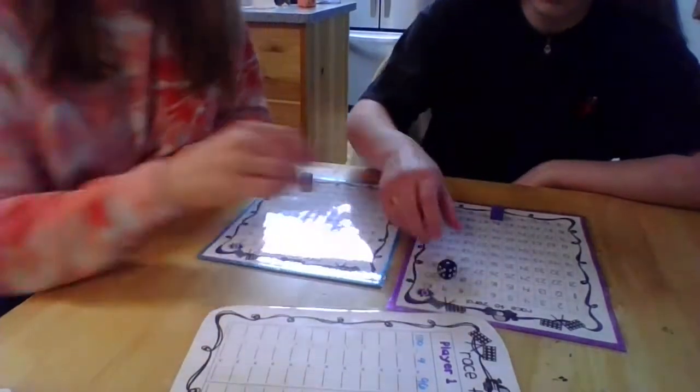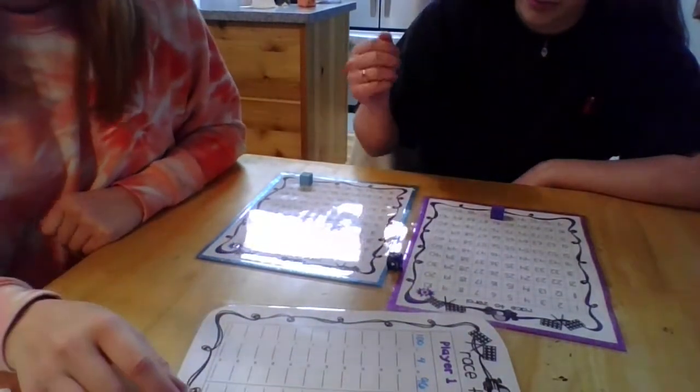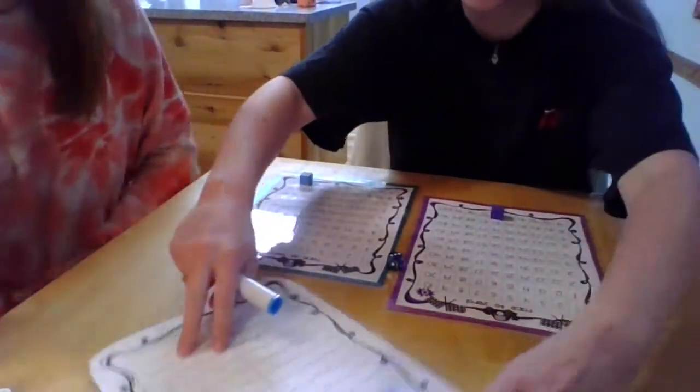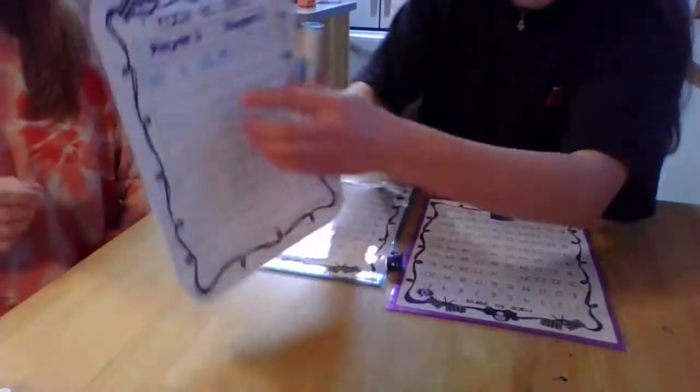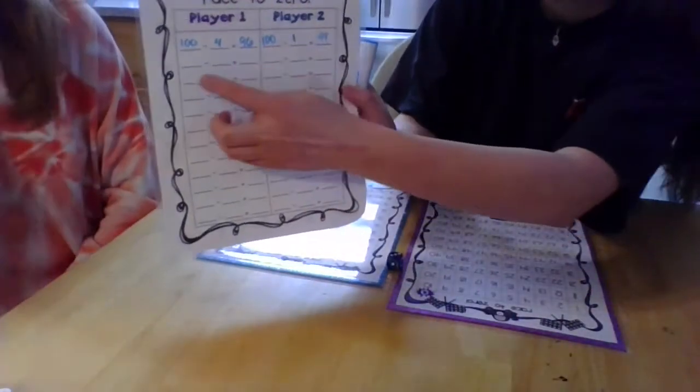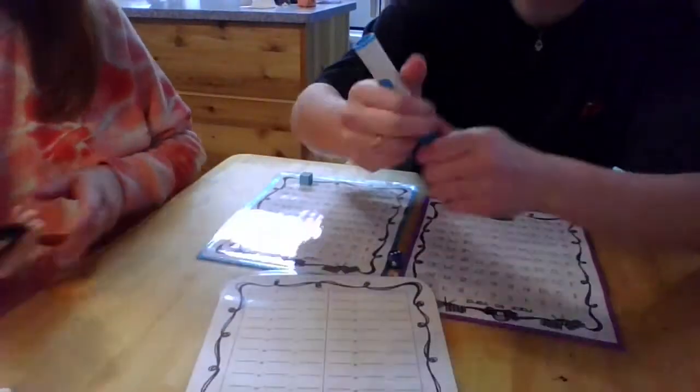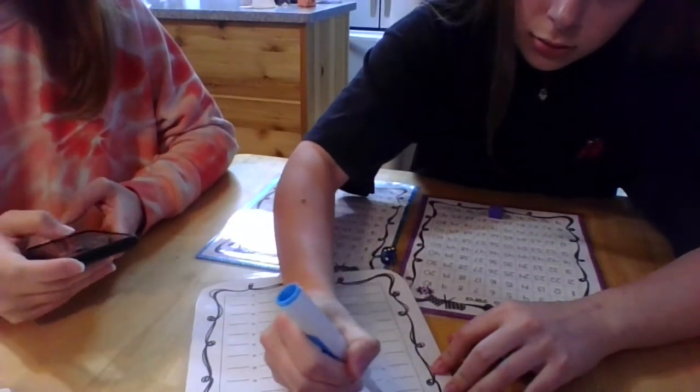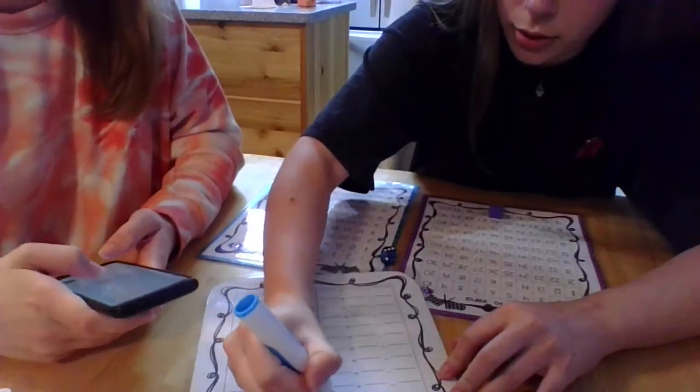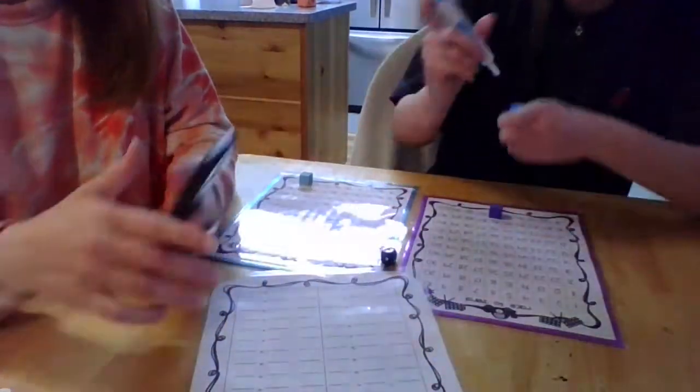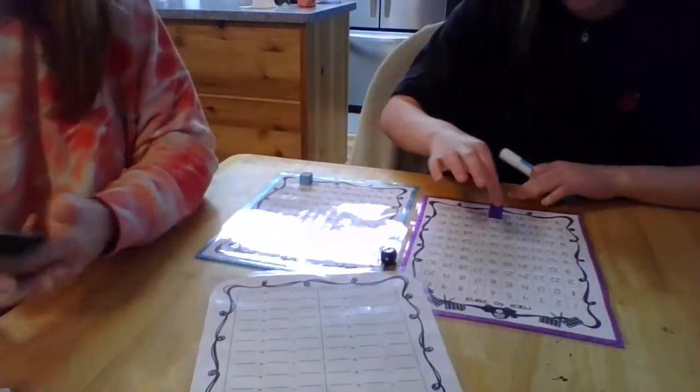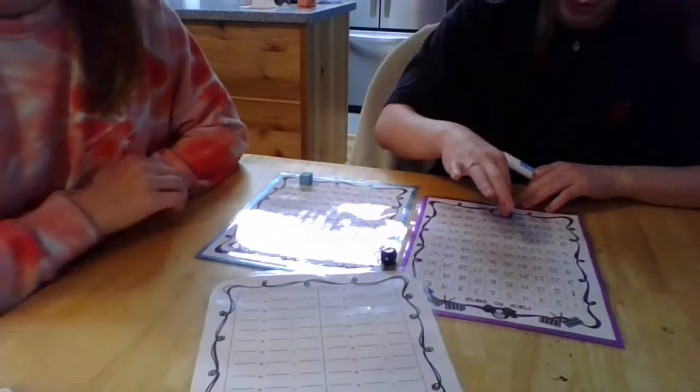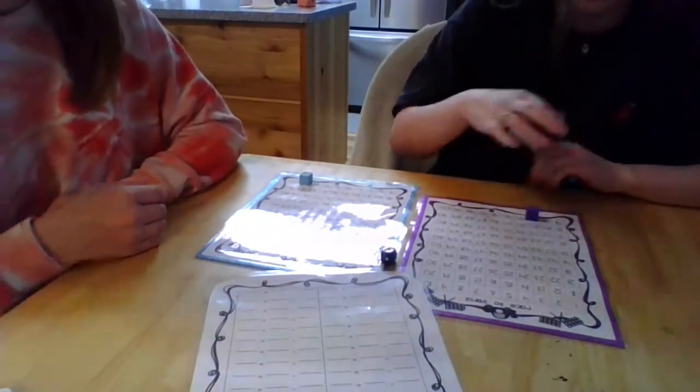And then we'll do one more round. So I got a 3. So I'm gonna take the number that I left off with here and put it here. So 96 minus 3. 93. So then I'm gonna move my little cube here, my little play piece to 93.